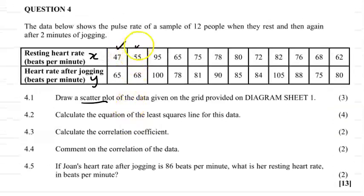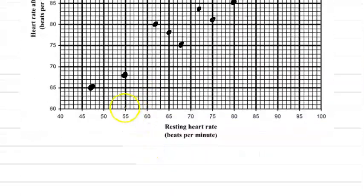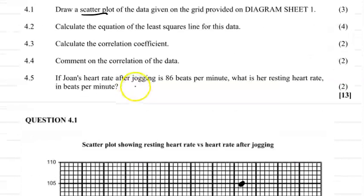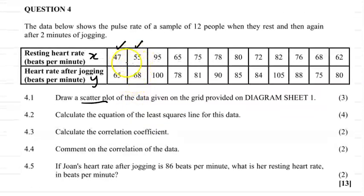The second coordinate is 55 and 68. Therefore the second coordinate is there. We go 55 is on the x-axis and 68 on the y-axis.